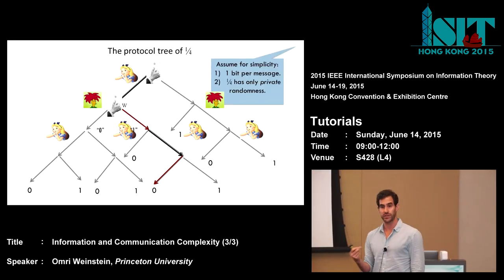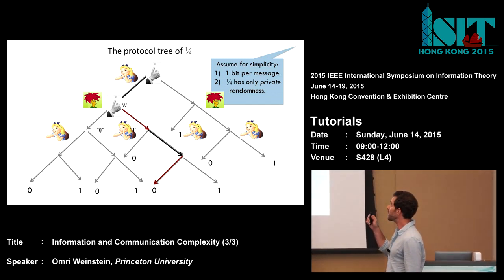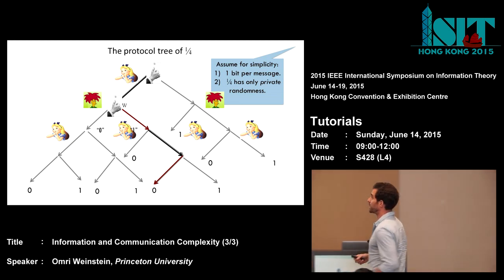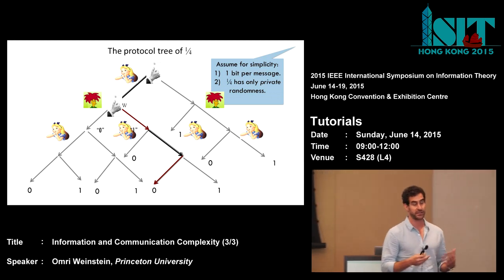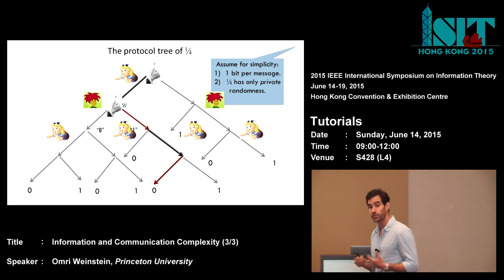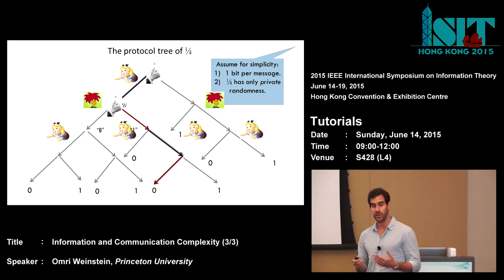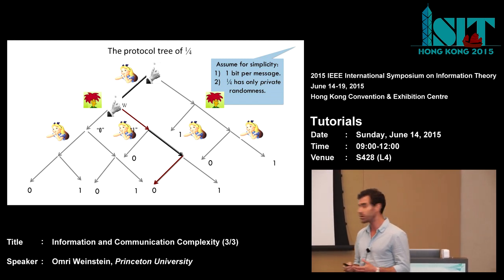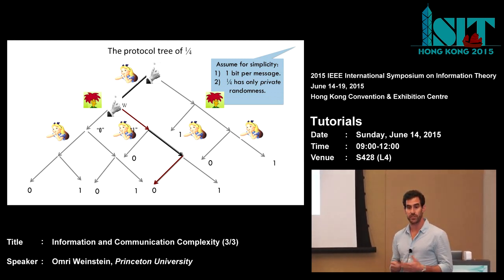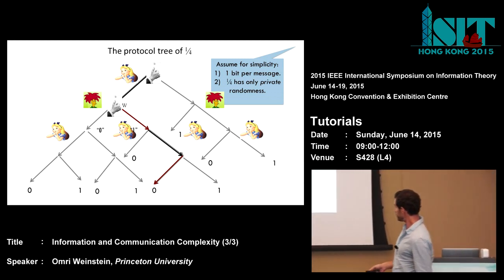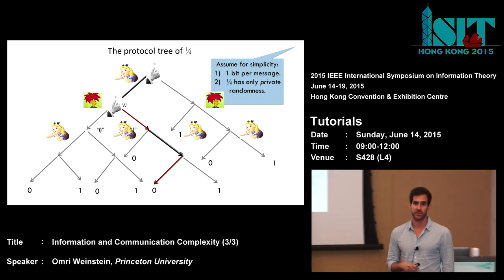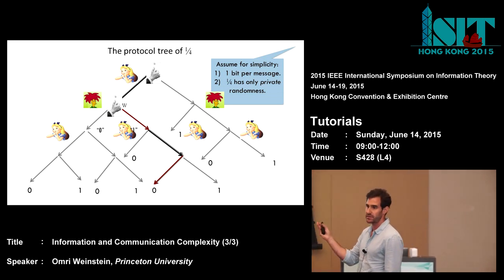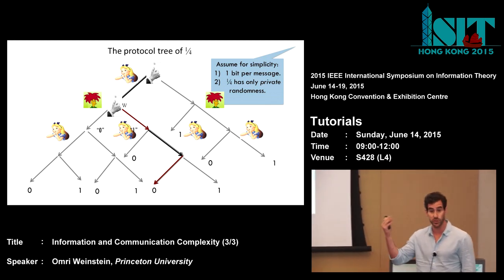Before diving into technical details, it will be useful to view the interactive compression task equivalently as the task of sampling paths in the protocol tree of Pi. Every communication protocol can be viewed as a binary tree — and we will assume for this part of the talk that each message communicates only one bit, which is without loss of generality up to a factor of two in the communication. We also fix the public randomness, which is also without loss of generality.